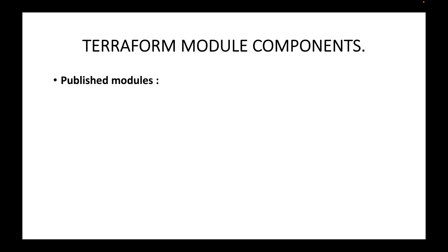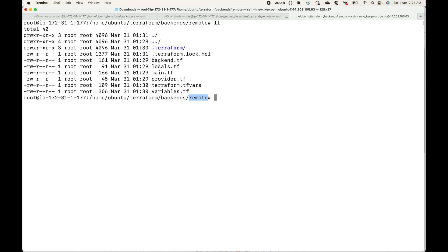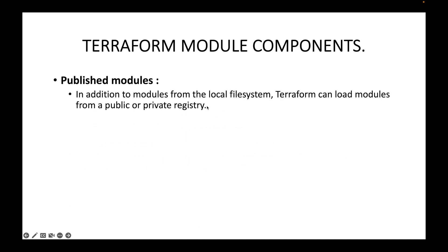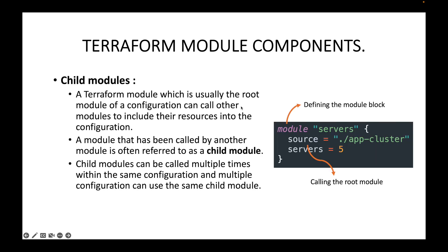One way to work with Terraform modules is locally — defining the root module on the local machine and calling it from the local machine itself. You can see this with the dot-slash prefix followed by the directory name, meaning the root module is available on the local machine. This works fine if you are a single developer, but if you are working in a team and want to share your module with other developers, that's where published modules come in.